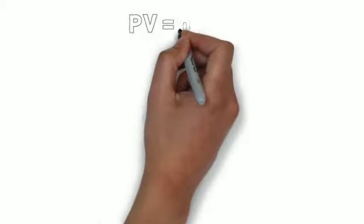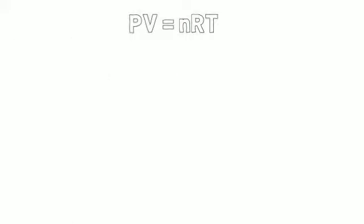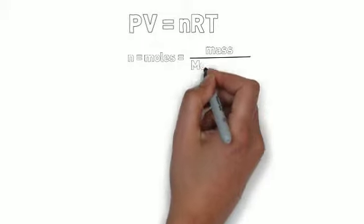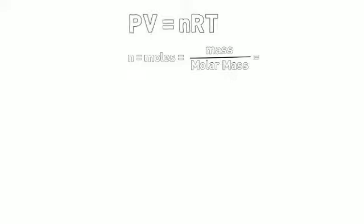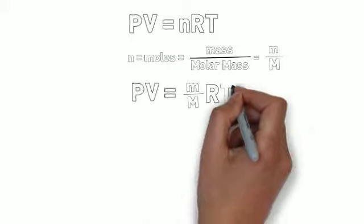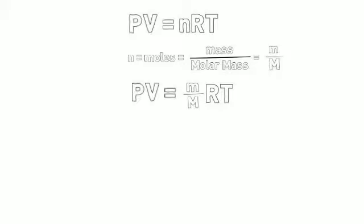We're going to take our ideal gas law, PV equals nRT, and rearrange it. The first thing we need to recognize is that n stands for moles. Moles are the amount of mass divided by the molar mass of the substance — mass divided by molar mass. Setting little m equal to mass and capital M equal to molar mass, we can substitute that into the equation where n is. So instead of PV equals nRT, we get PV equals little m over capital M times RT.